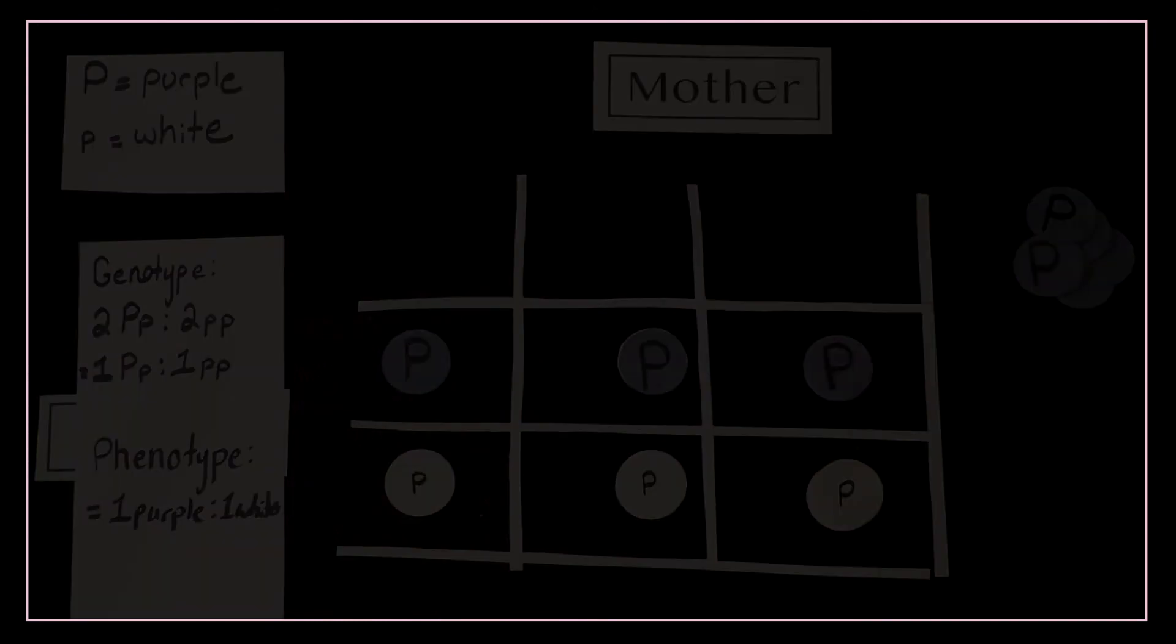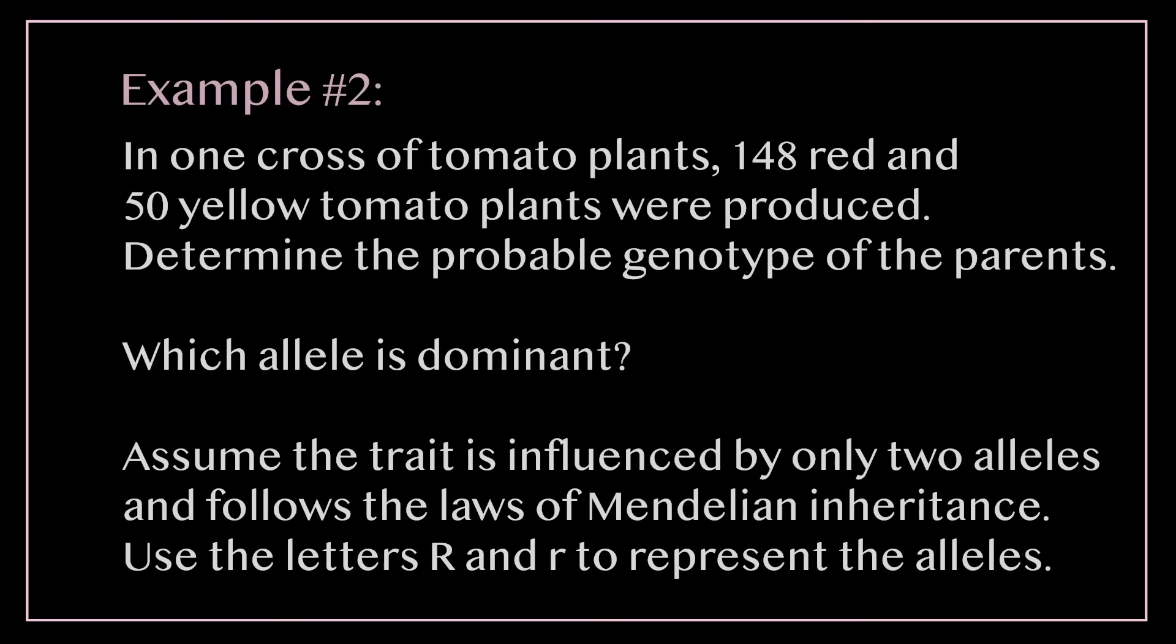Okay now a more complicated question. We're going to use offspring to determine the parents. In one cross of tomato plants 148 red and 50 yellow tomato plants were produced. Determine the probable genotype of both the parents. Which allele is dominant? Assume the trait is influenced by only two alleles and follows the law of Mendelian inheritance. Use the letters big R and little r to represent the alleles.